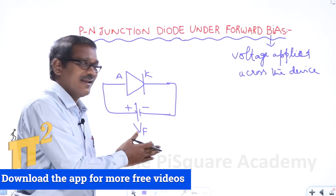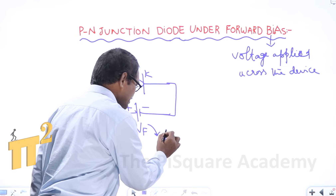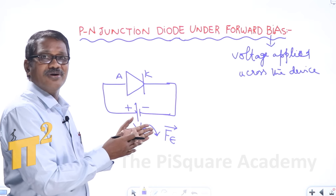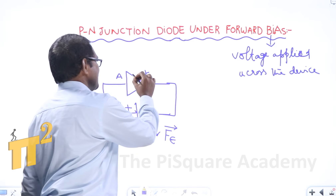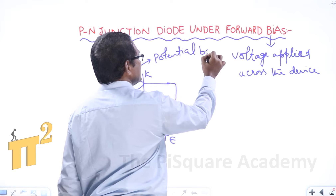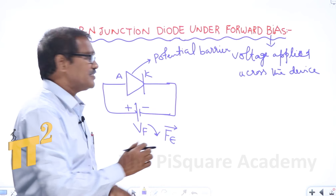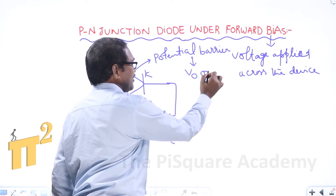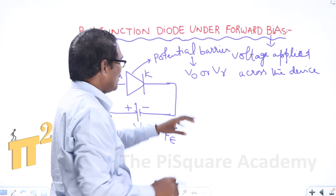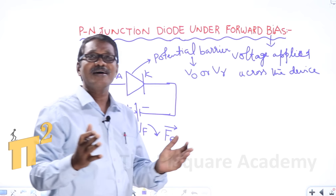If we apply voltage across the device, it results in an electric force. Within the diode, a potential barrier or depletion region exists, which opposes the movement of majority charge carriers. The contact potential or threshold potential also results in a force which opposes the movement of majority charge carriers. Hence, as long as this potential barrier exists, no majority current will be flowing through the diode.